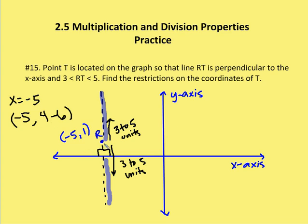Now, moving downwards, I do the same thing. I count 3 units, 3 to 5 units, down to T. So I know that T would be either 1 minus 3 or 1 minus 5 in between those two points. So 1 minus 3 is negative 2. So again, I have my x-coordinate, which has to be negative 5. 1 minus 3 gives me negative 2. And then that's going to be 1 minus 5 or negative 4. So the restrictions are that the coordinates have to be either negative 5 with a y-coordinate between 4 and 6, or negative 5 with a y-coordinate between negative 2 and negative 4.